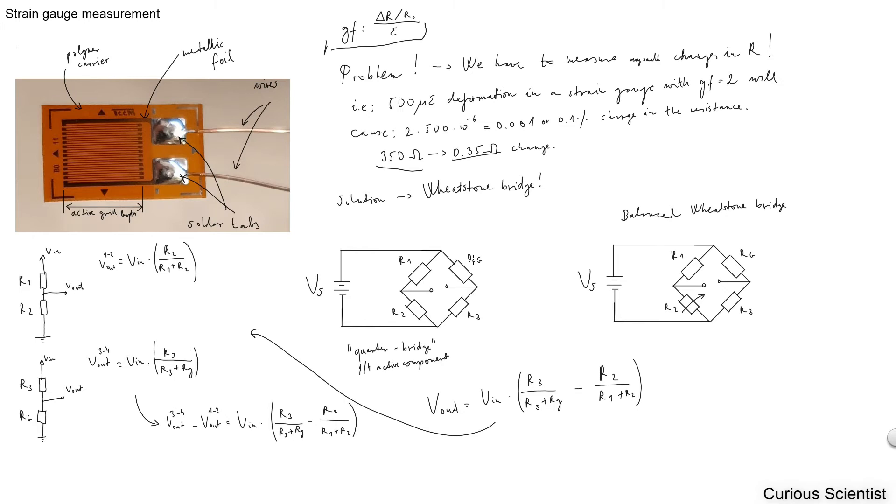What we can do is that we take a Wheatstone bridge. The Wheatstone bridge is here, where we basically have two voltage dividers opposed to each other. On one side we have R1, R2, and on the other side we have RG, which is the resistance of the strain gauge, and R3.